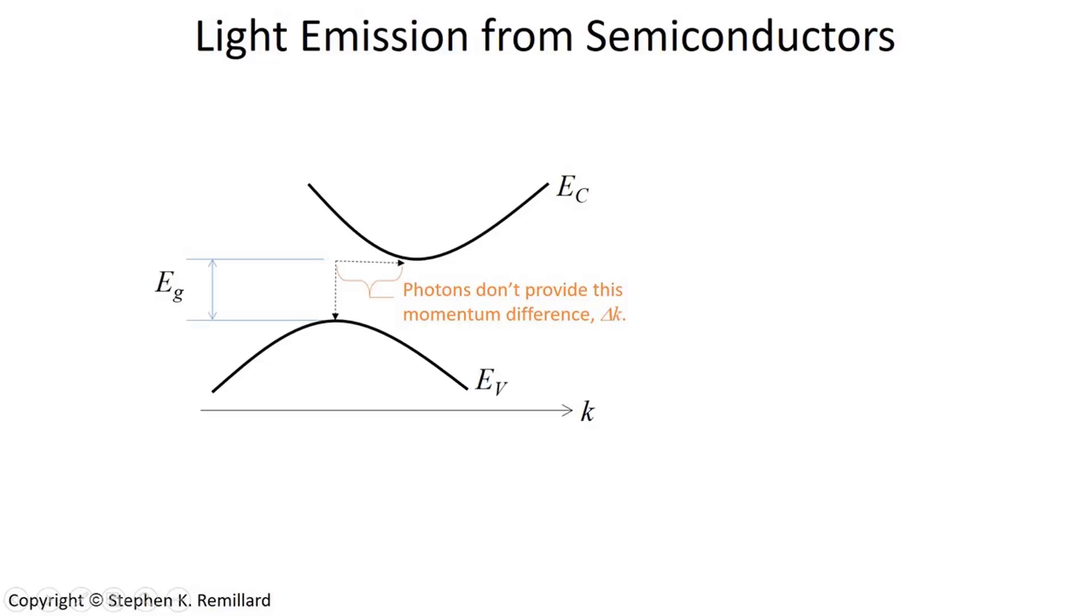Just to remind you, the band structure looks as shown here. The valence band and the conduction band are offset from each other in k-space. That means, in order for a charge carrier, an electron to jump between the valence band and the conduction band, it also needs to undergo a momentum change, in particular a direction change of momentum.